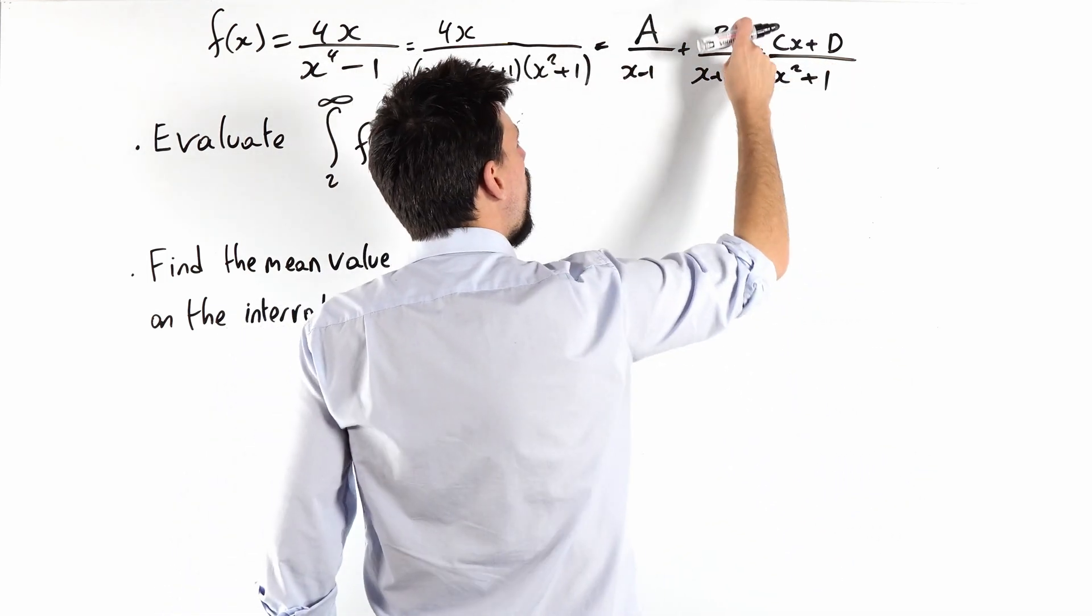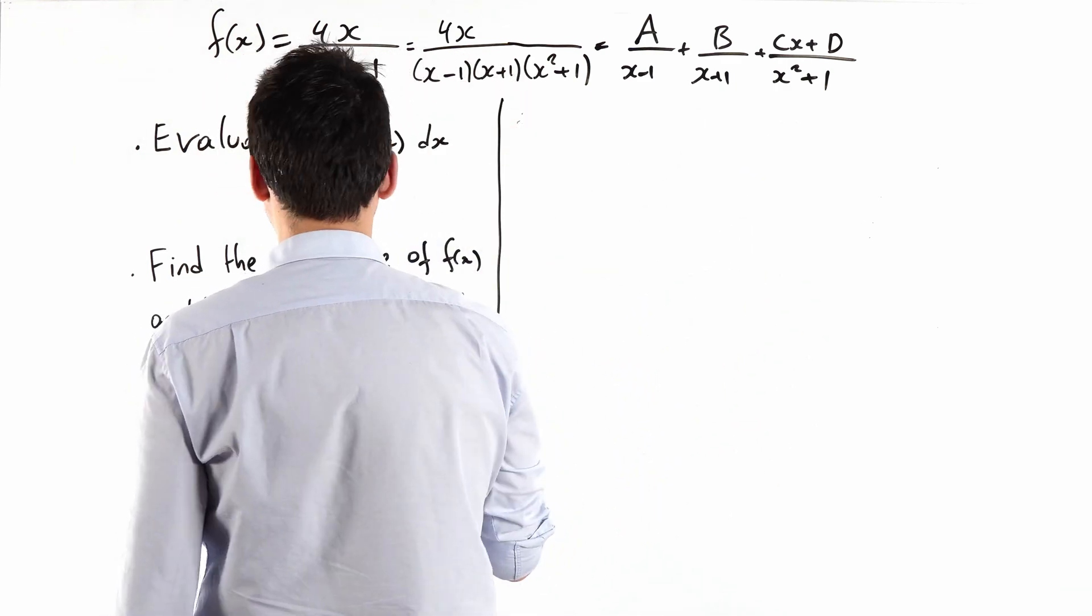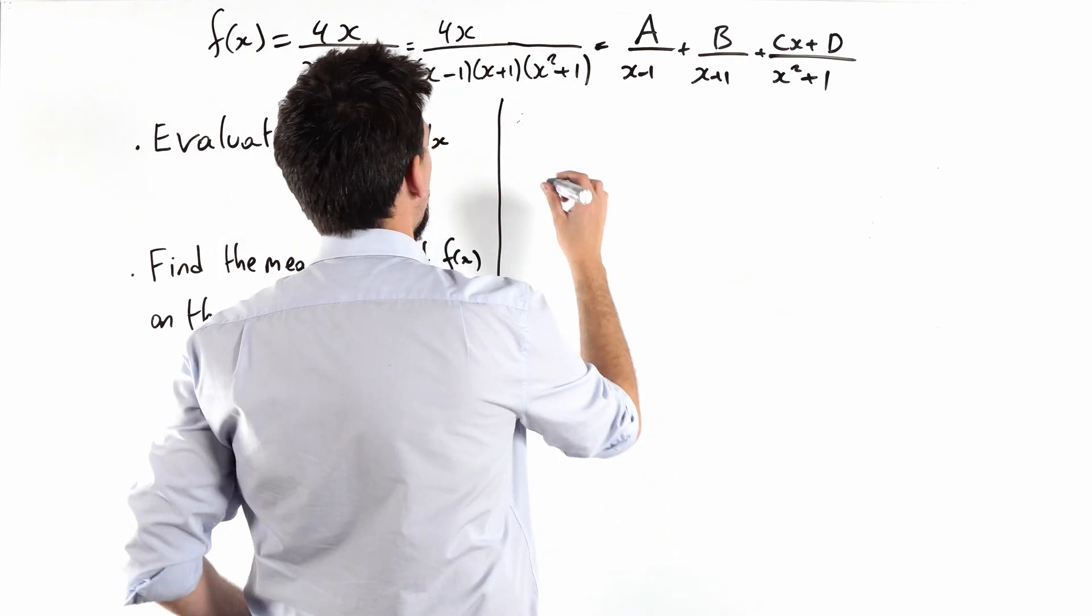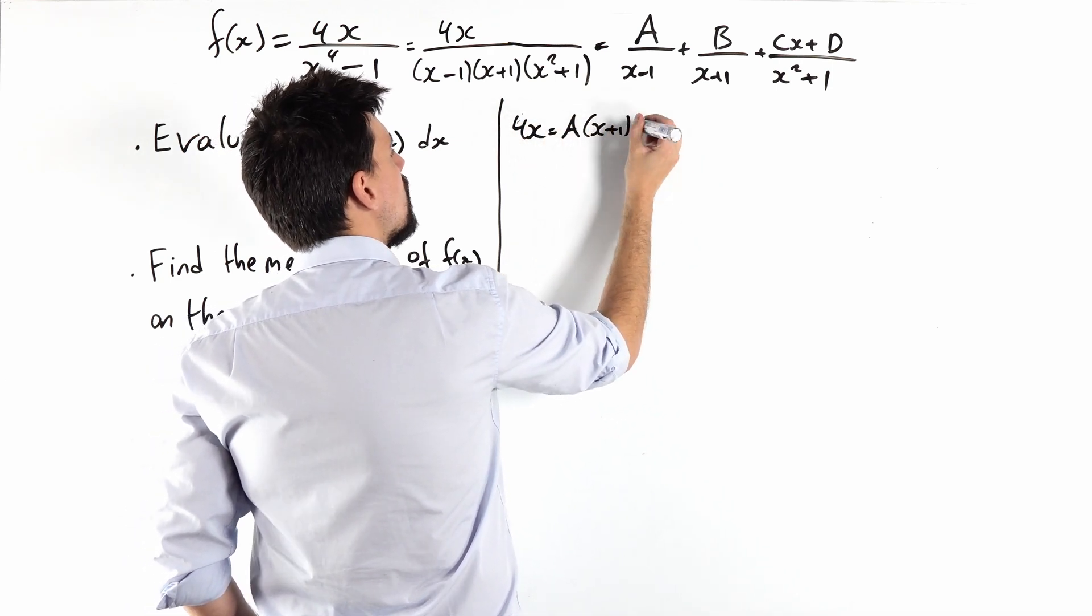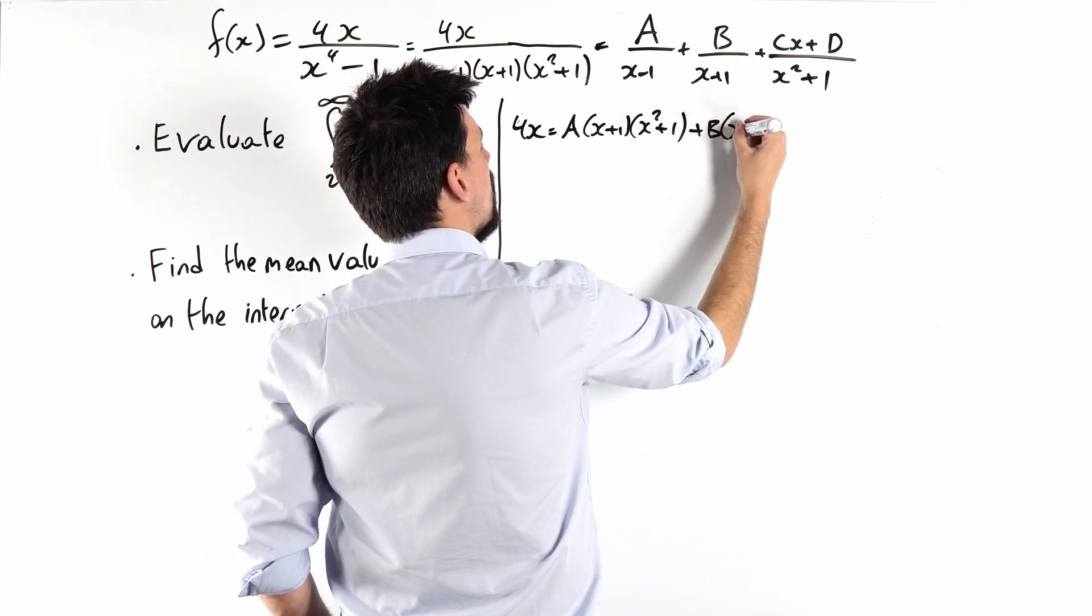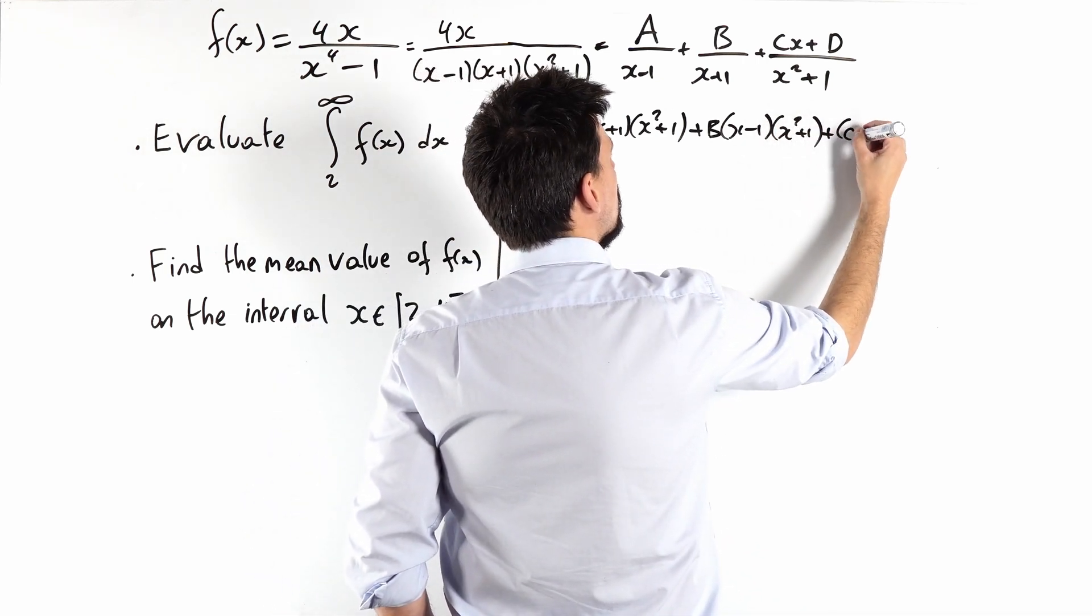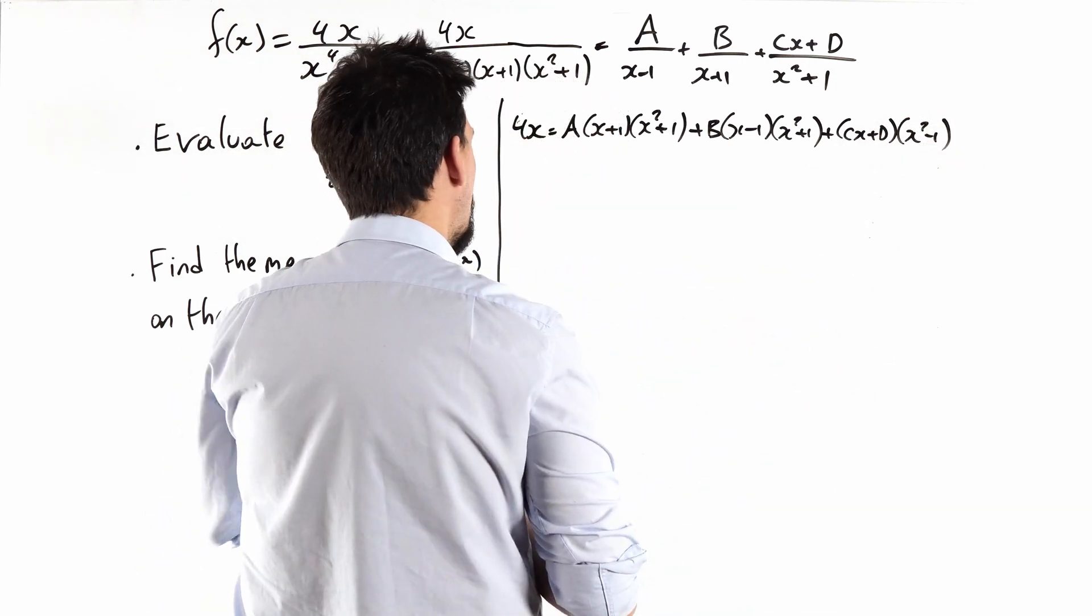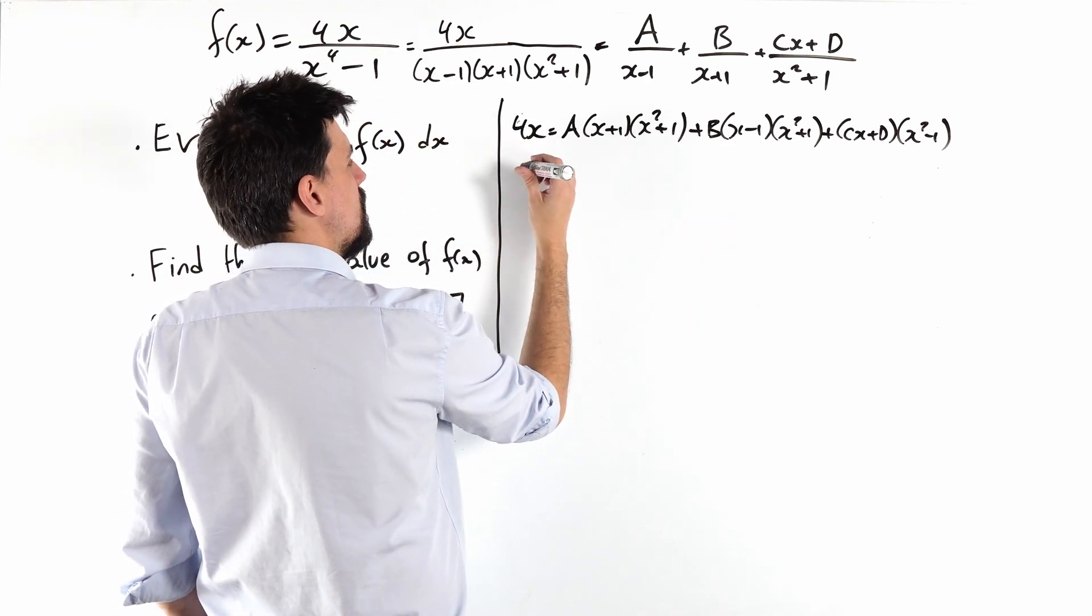The numerator, one order less than the denominator. So really we've got a few things we can do, but let's multiply it all up. That tells me that 4x is a times x plus 1, x squared plus 1, plus b times x minus 1, x squared plus 1, plus cx plus d times x squared minus 1. Okay, we can do this in a bunch of ways. I'm going to compare coefficients because that's just how I'm feeling.